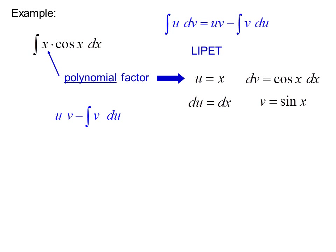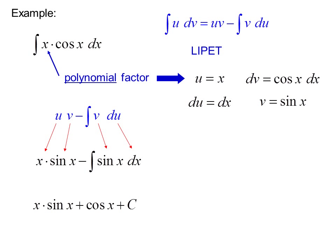Taking the antiderivative of dv gives v equals sine x. Then substituting into the formula, we get x times sine x minus the integral of sine x dx. We know the antiderivative of sine x, so the answer is x times sine x plus cosine x plus C. Don't forget the plus C at the end.